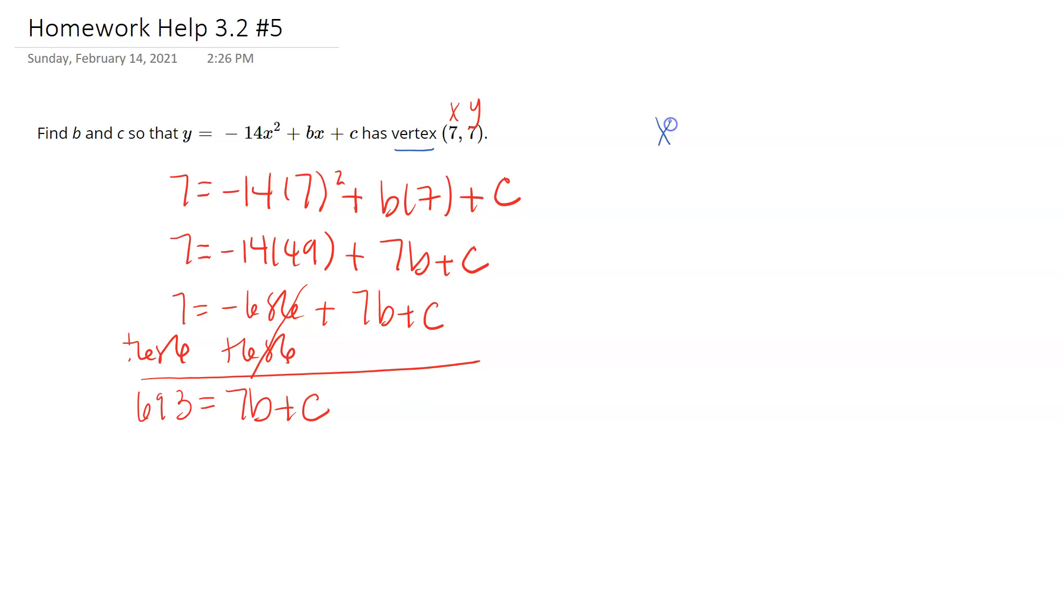Well, you know that working with your quadratics, x equals negative b over 2a is the h value of a vertex. So if we look at those values, we know that x is going to equal negative b (we don't know, we're trying to figure that out) over 2 times a, which we know to be negative 14. And we already know this equals 7, which is given.